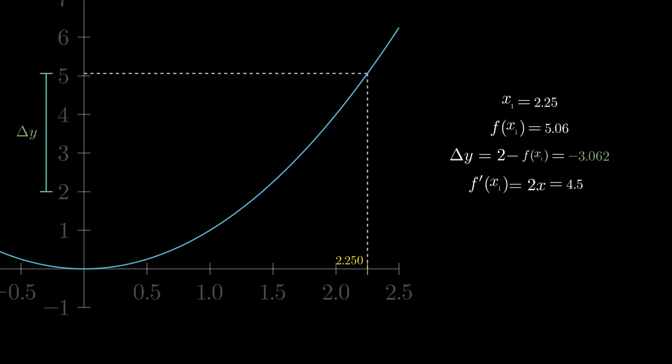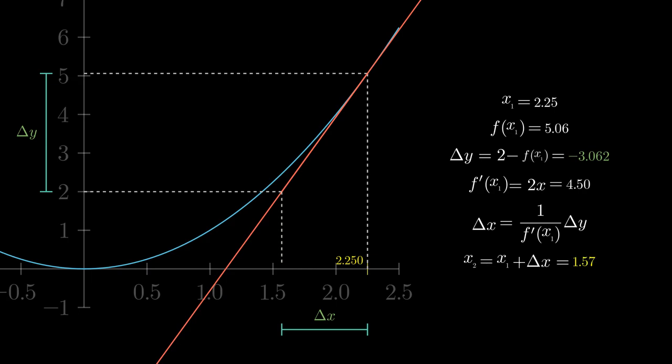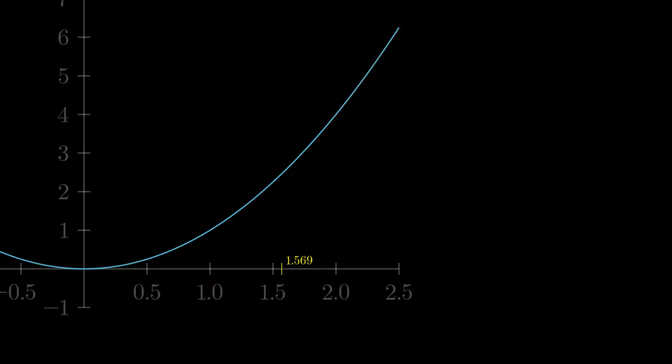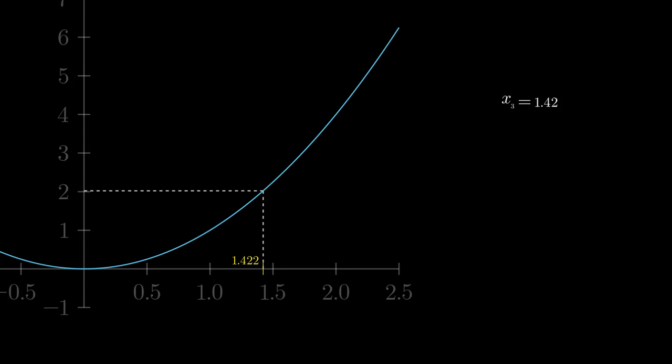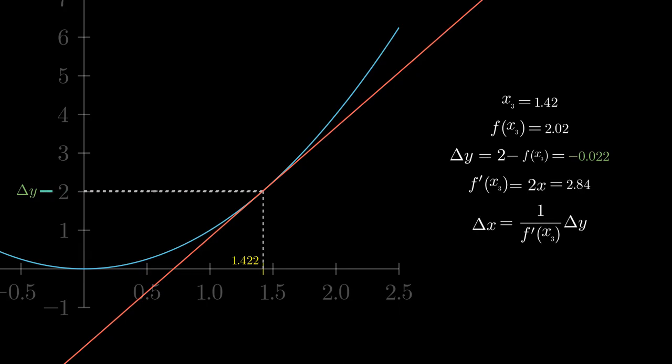Find delta y, do the linear approximation, find the correction factor delta x, add it to the previous assumption. We repeat the process till the error becomes negligibly small. So, x is equal to 1.414 can be taken as the final answer.